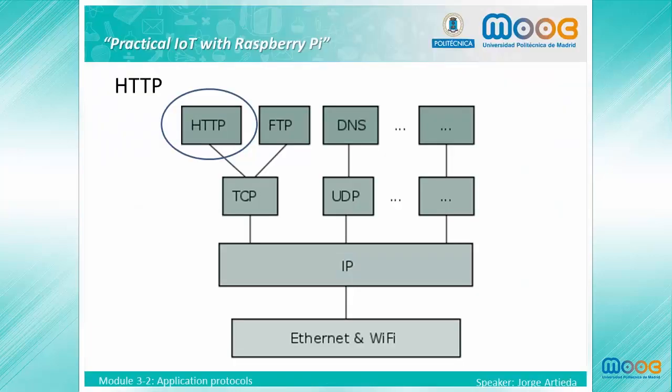Hypertext Transfer Protocol is an application layer protocol designed to be used on top of the TCP/IP protocols. HTTP is designed to provide access to a multimedia resource indexed by Uniform Resource Locator. HTTP commonly uses port 80 and requests and responses are made in plain text through an open TCP/IP connection.